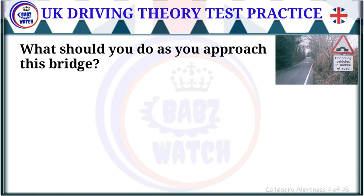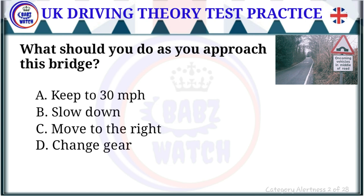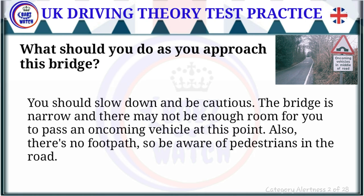Question 2 of 28: What should you do as you approach this bridge? The correct answer is: slow down. You should slow down and be cautious. The bridge is narrow and there may not be enough room for you to pass an oncoming vehicle. Also, there's no footpath, so be aware of pedestrians in the road.